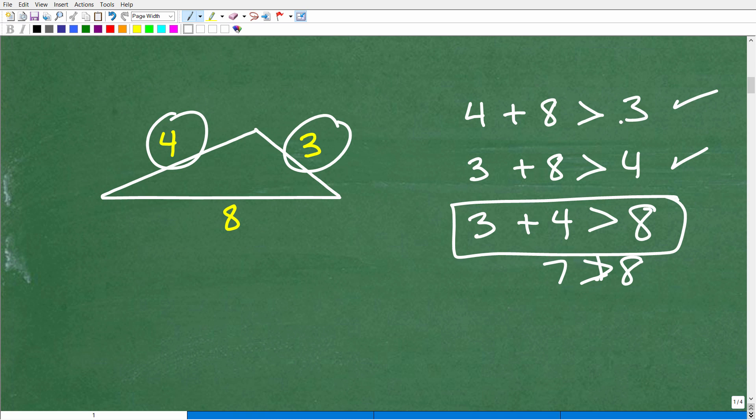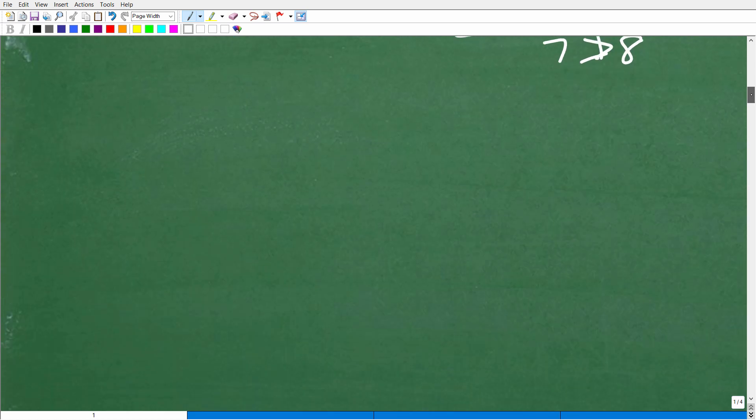This is an illustration of something called the triangle inequality, all right? If you had an actual triangle, in the actual triangle, the sum of any two sides is always going to be greater than that third side. So let's take a look at an actual triangle.